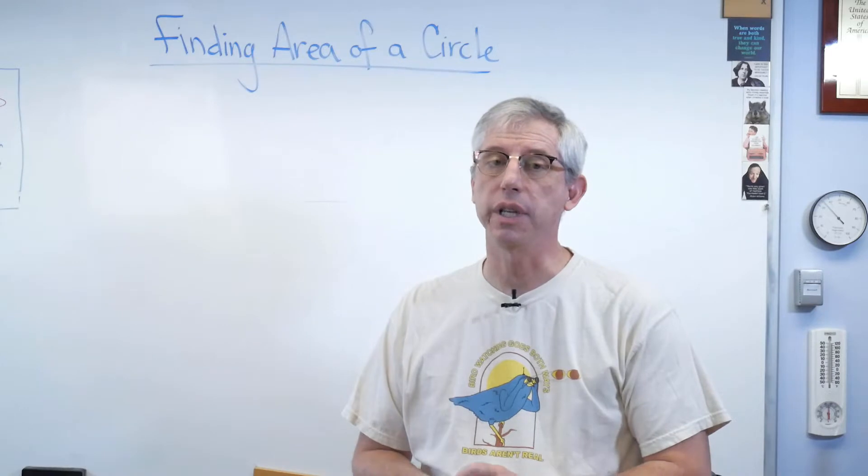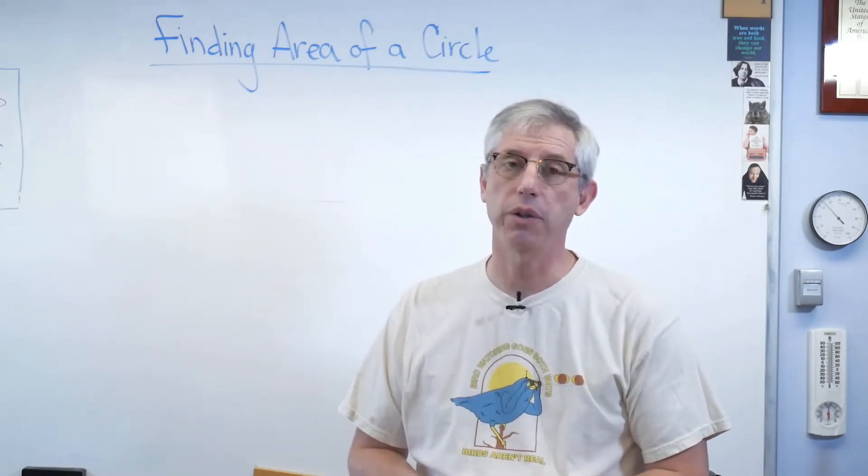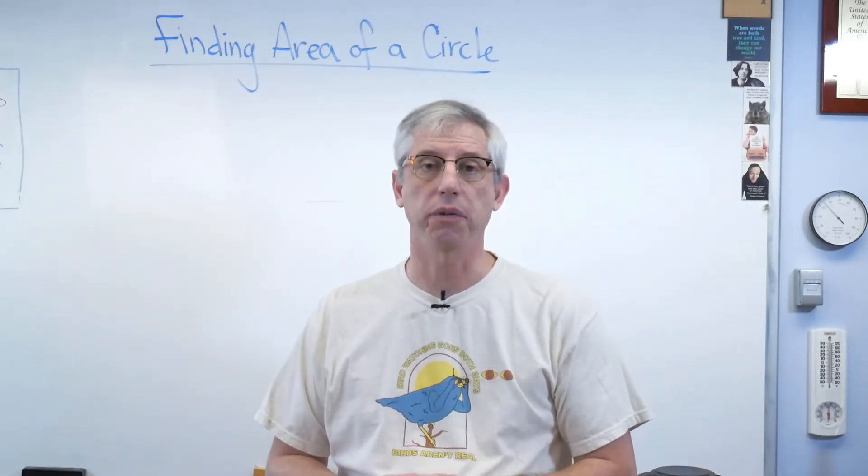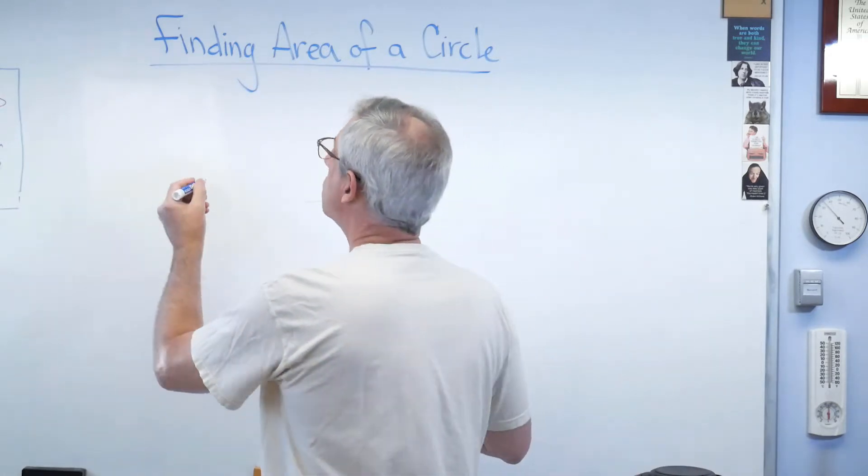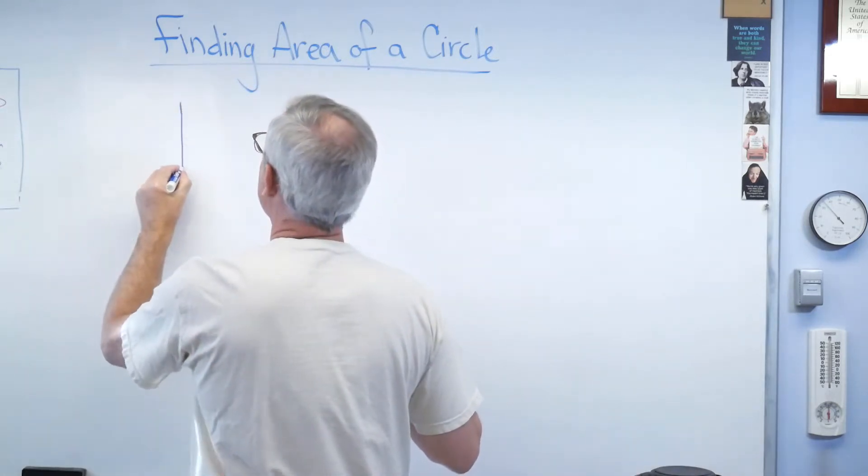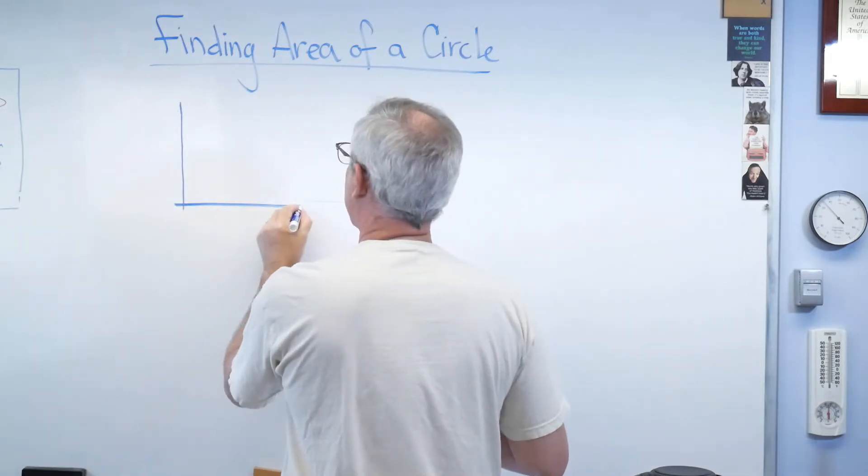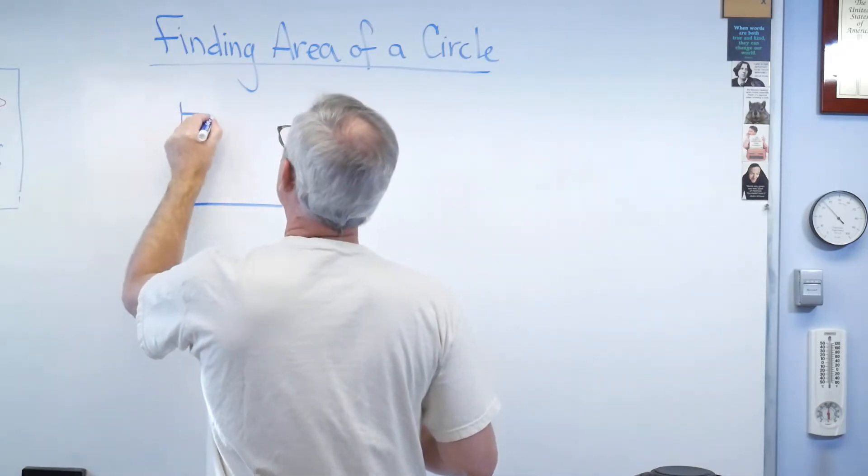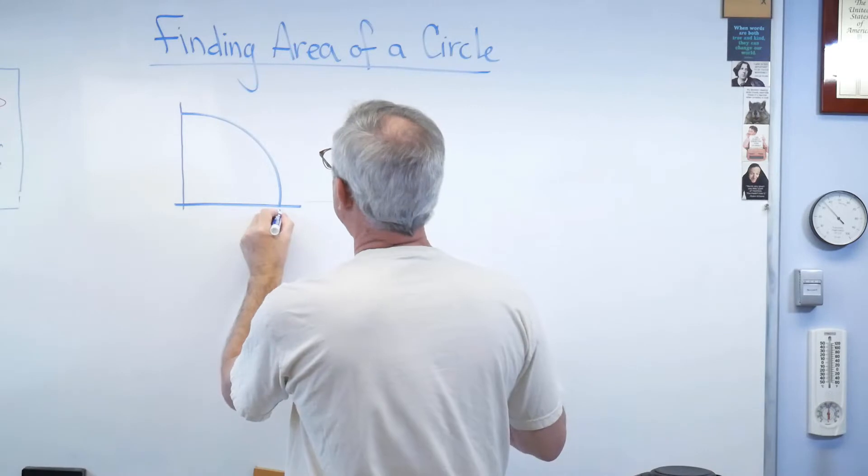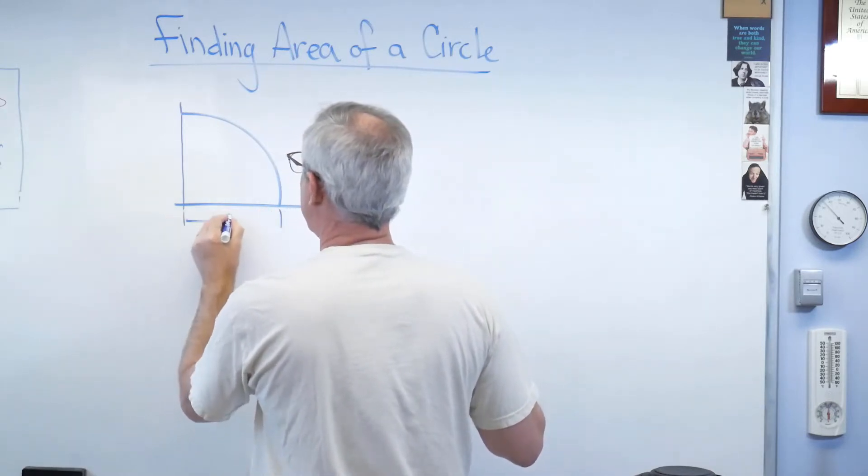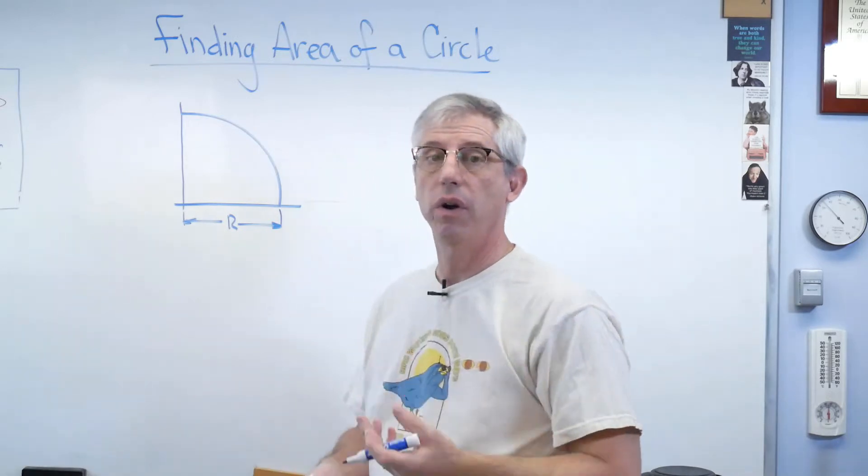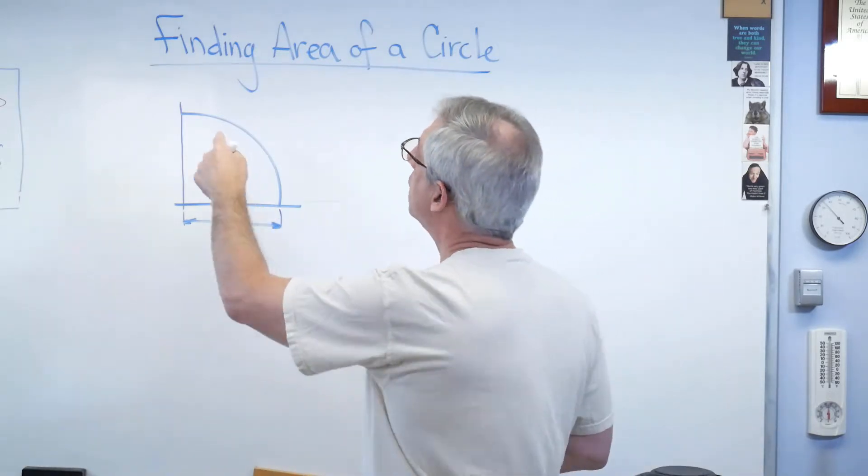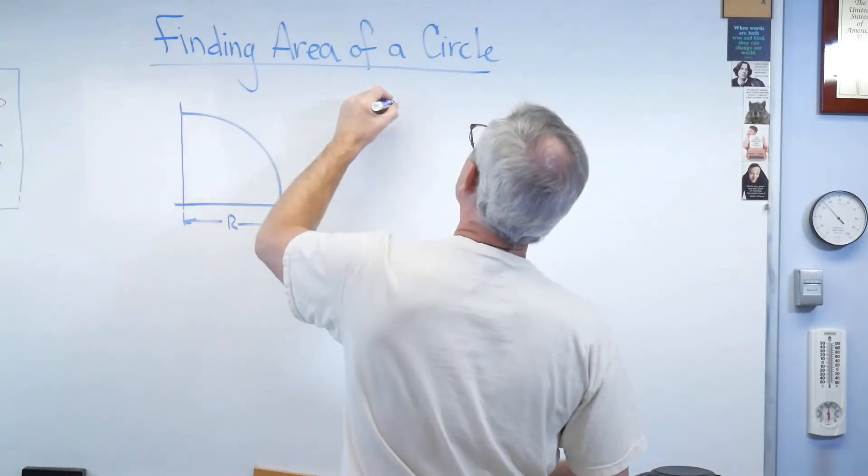Now, just for logistical reasons, it's easier to work with a quarter of a circle. So I'll do that, but you can work with a whole circle if you want. You're going to get the same answer either way. So let's work with a quarter of a circle here for now. And let's see if I can draw a quarter of a circle. That's not too bad. Okay, that's the radius.